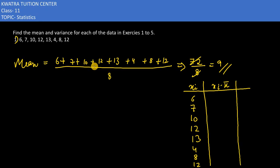So we get: 6 minus 9 is -3, 7 minus 9 is -2, 10 minus 9 is 1, 12 minus 9 is 3, 13 minus 9 is 4...